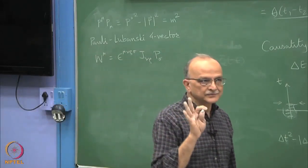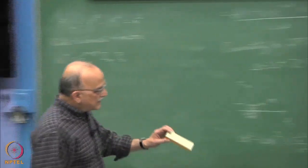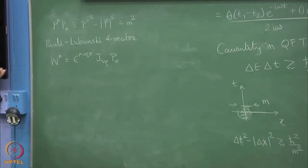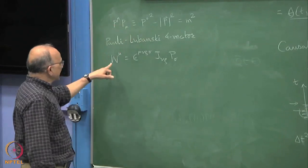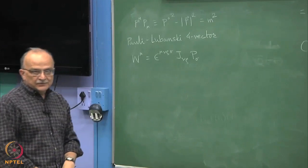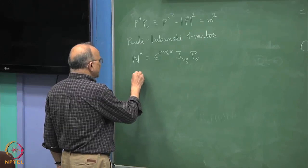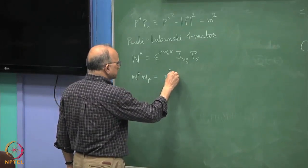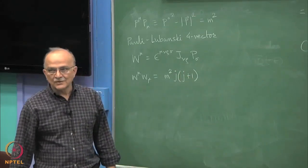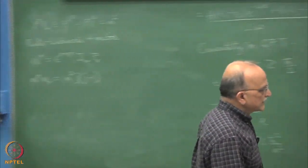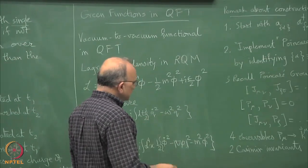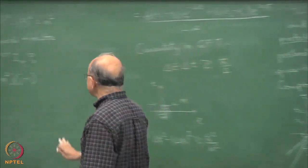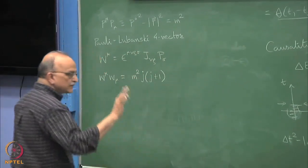It took a long time, it was like in mid 40s and involved Pauli. You construct a W mu which is equal to epsilon mu nu rho sigma times J nu rho P sigma. W mu W mu turns out to have magnitude M square times J into J plus 1. Where J is the would be Casimir invariant of only the rotations. The J into J plus 1 is exactly the same as would have been there if you had not put in translations.